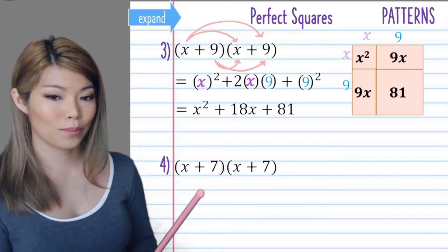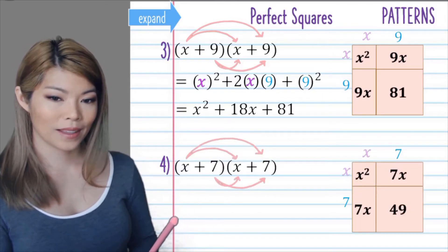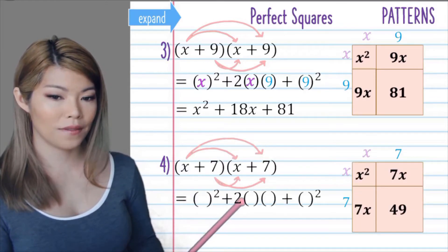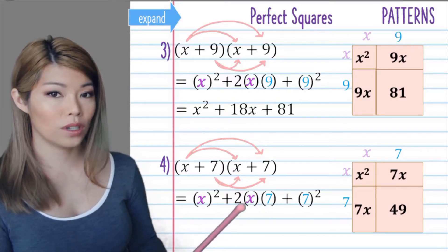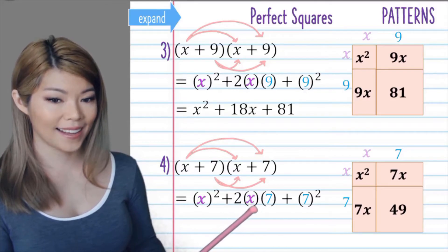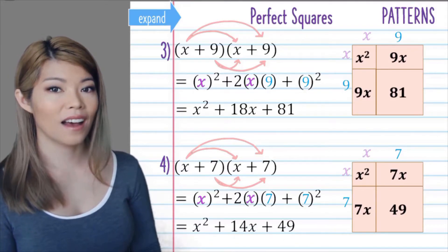Let's do that again, x plus 7 this time. So we have x in the first two brackets and 7 in the last two brackets. So we have x squared, 2 times 7 is 14x, and 7 squared is 49.